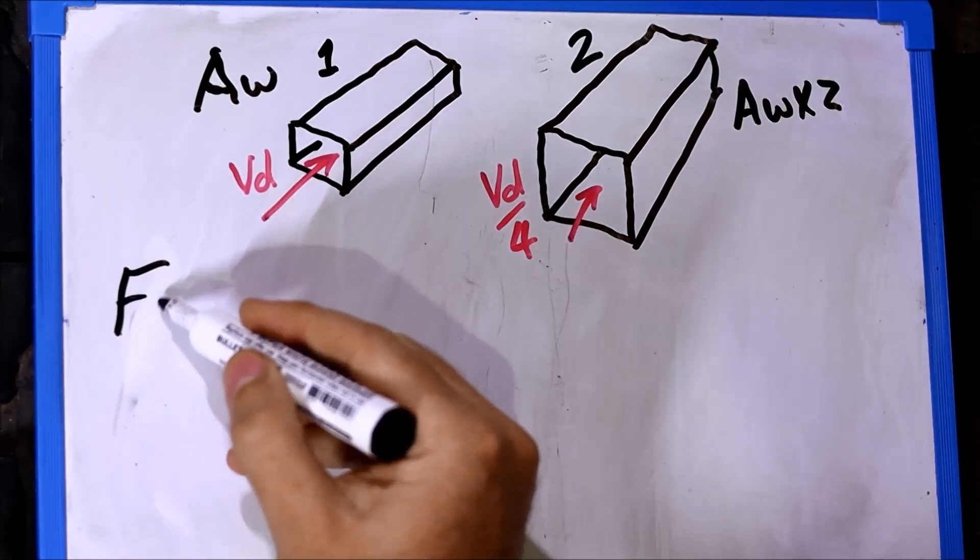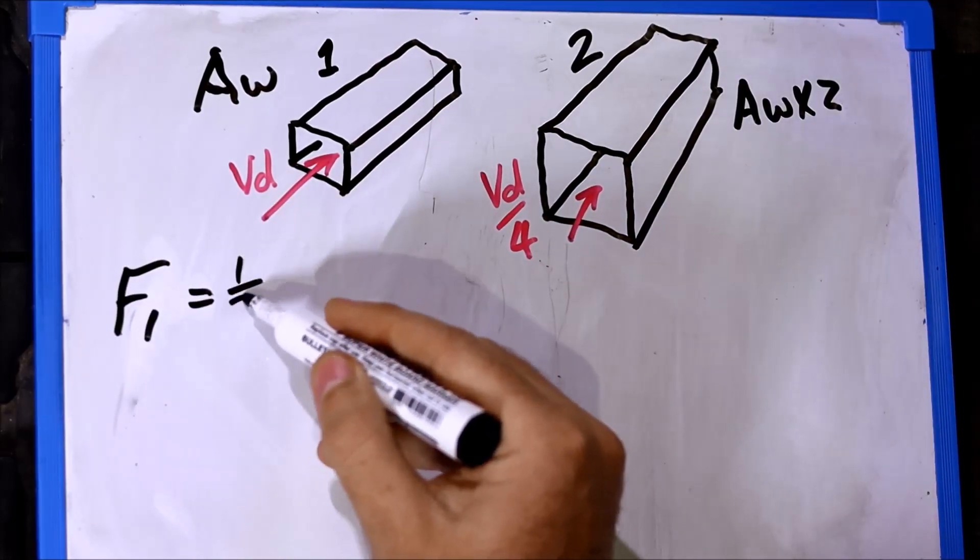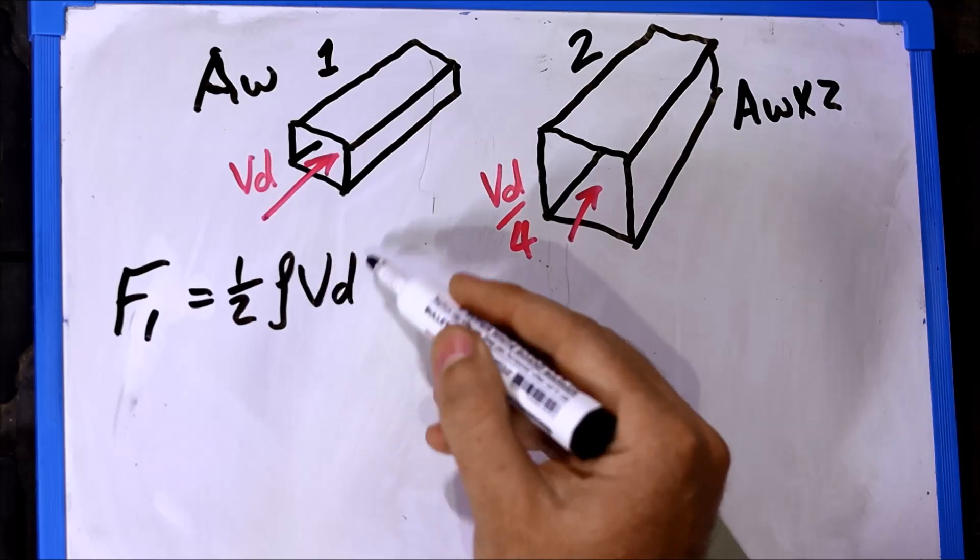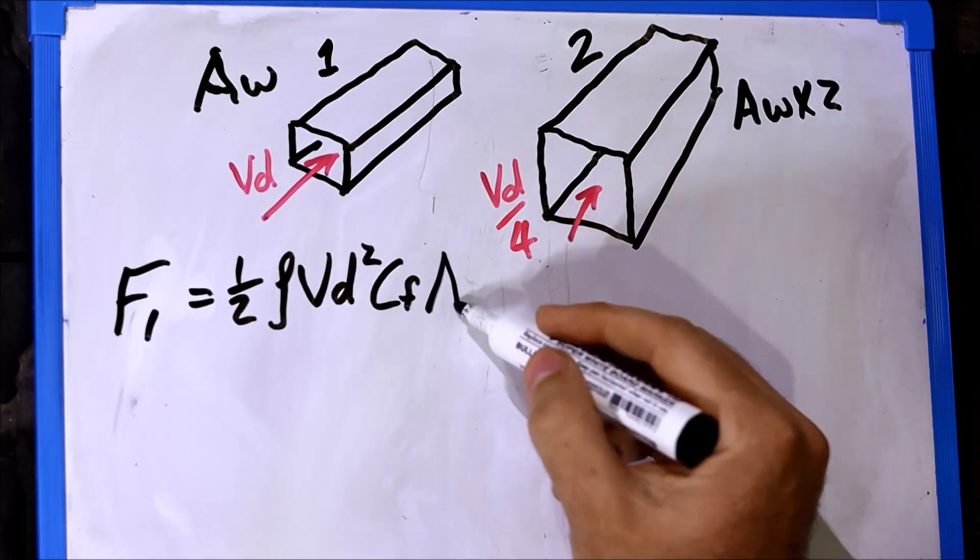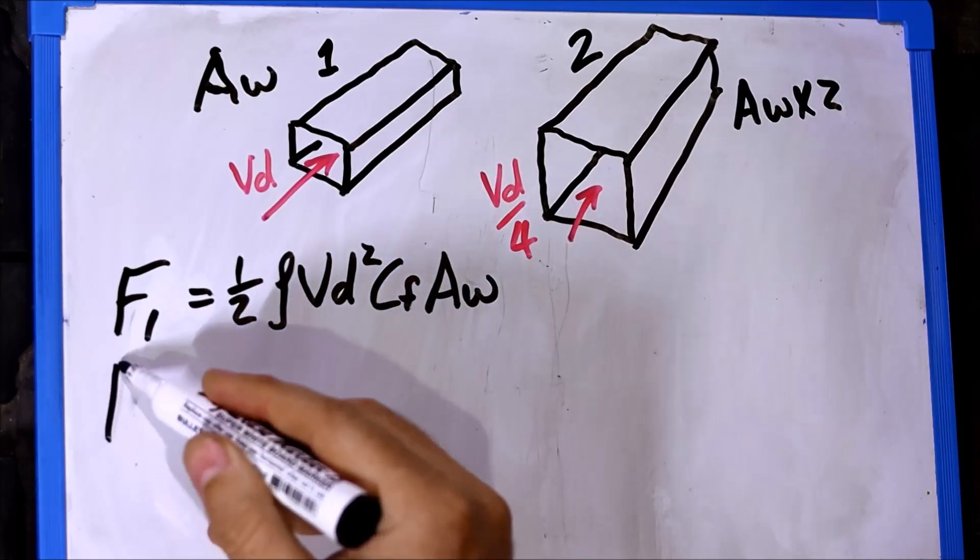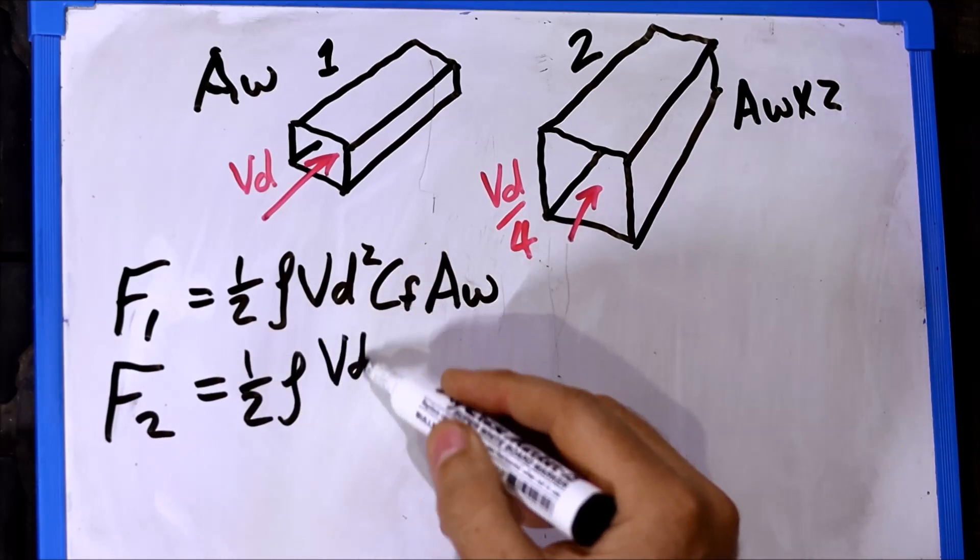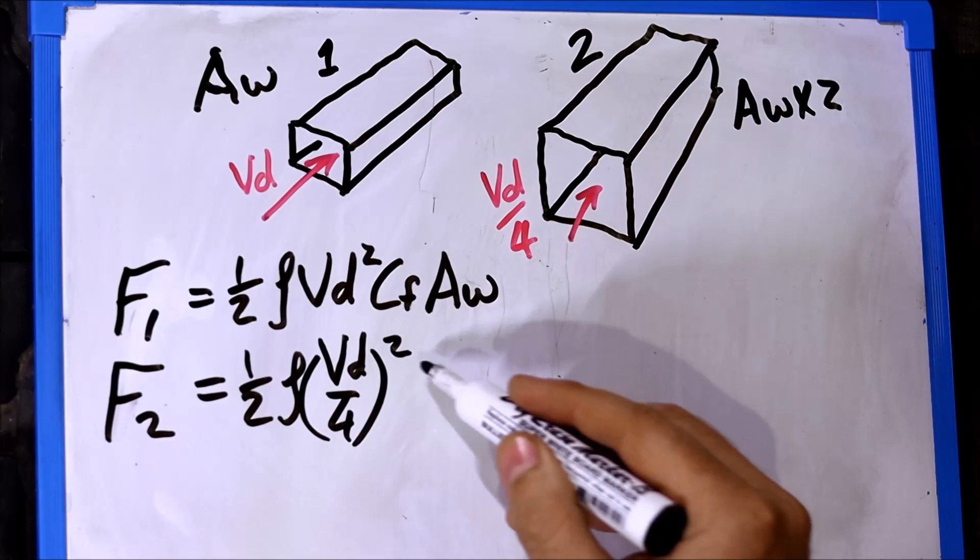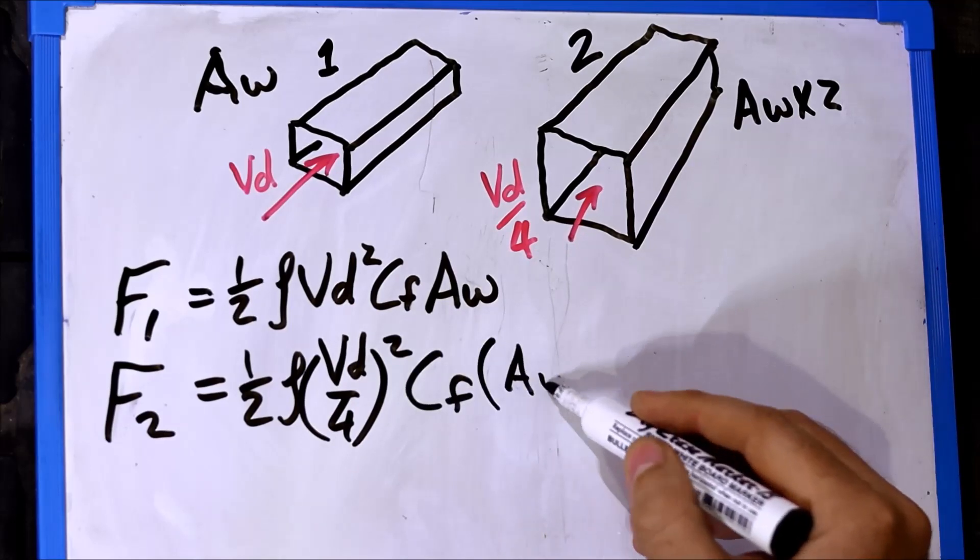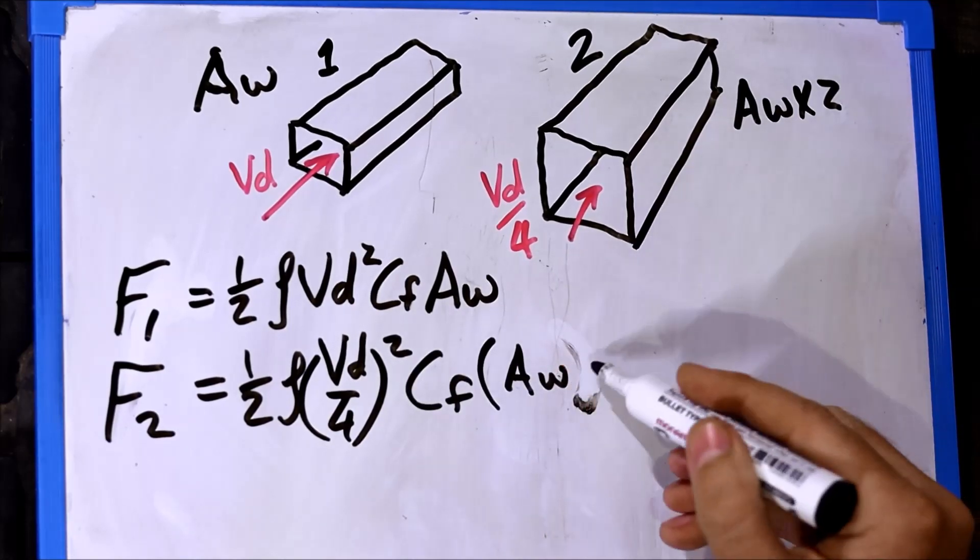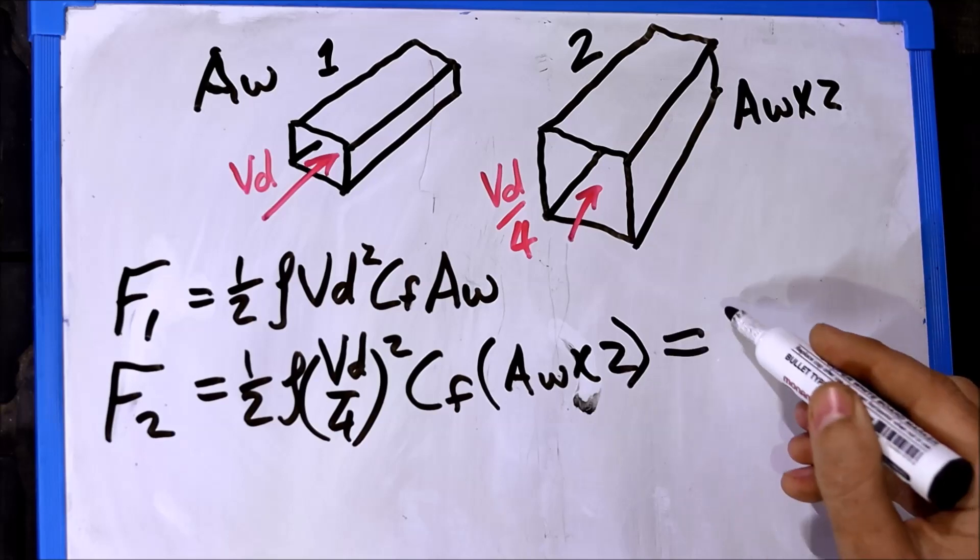The equation for the skin friction includes both the velocity through the duct as well as the wetted surface inside, but note that the duct velocity is squared. If the equation is repeated for the adjusted velocities and areas of the larger duct, it will show that the skin friction has reduced to one eighth of what it was before.